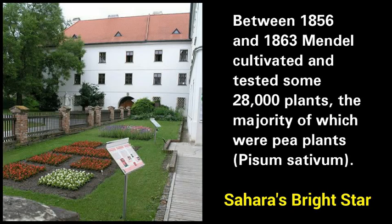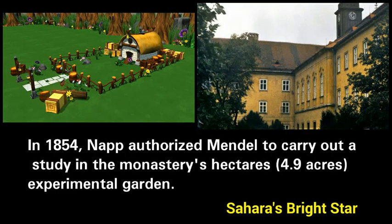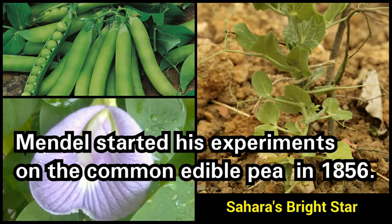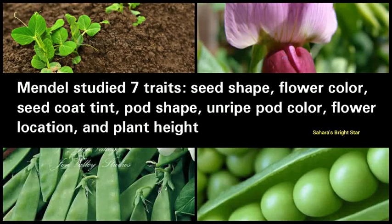Between 1856 and 1863, Mendel cultivated and tested some 28,000 plants, the majority of which were pea plants. In 1854, Knapp authorized Mendel to carry out a study in the monastery's 2-hectare experimental garden. Mendel started his experiments on the common edible pea in 1856, studying seven traits: seed shape, flower color, seed coat tint, pod shape and ripe pod color, flower location, and plant height.